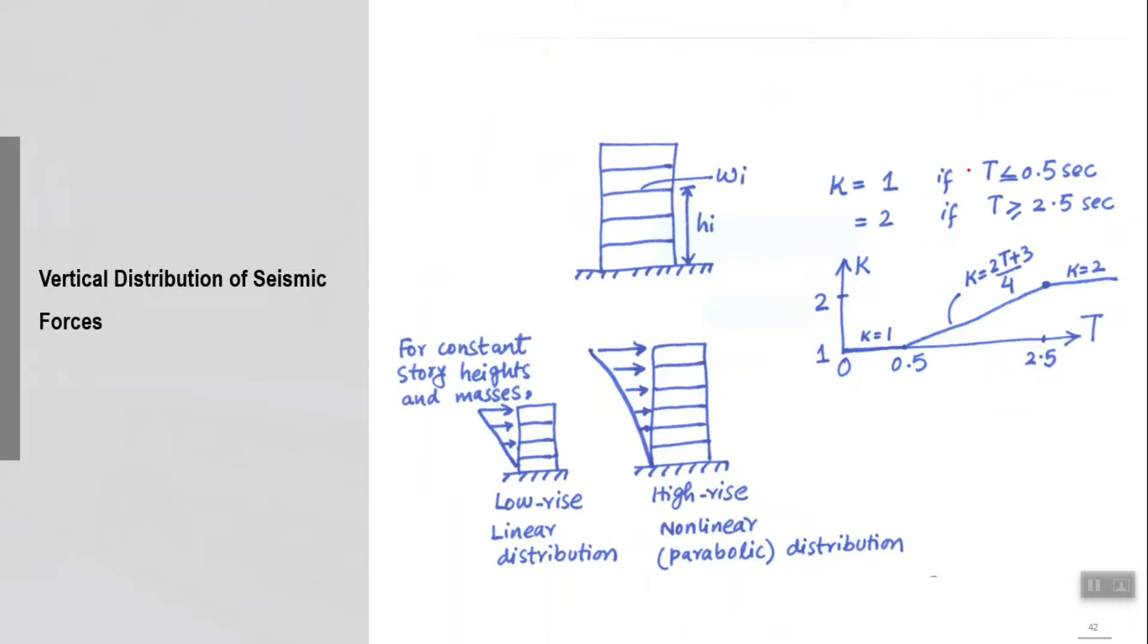k is a function of building height, actually it is the function of time period of the structure, which is the function of building height. For low rise buildings where T is less than 0.5 second, k is 1, which means we will get a linear kind of distribution. For very high rise buildings, it will be parabolic and intermediate will be linear interpolation. k will be calculated for, let's say for 1 second, by linear interpolation and then the formula can be applied.